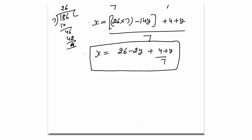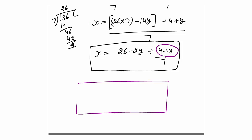Now we will apply the logic. You can see that x and y are both integers. For x to be an integer, 4 plus y must be divisible by 7 — otherwise x will not be an integer. Given that x and y are positive integers, y must be 3, because 4 plus 3 equals 7, which is divisible by 7. So I got one solution: y equals 3.